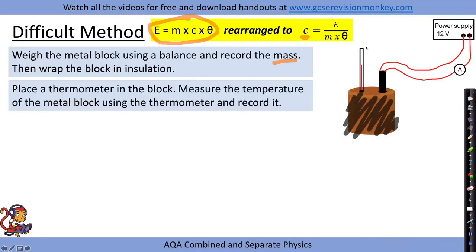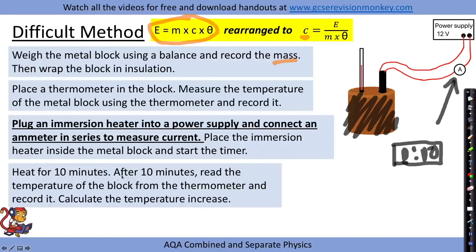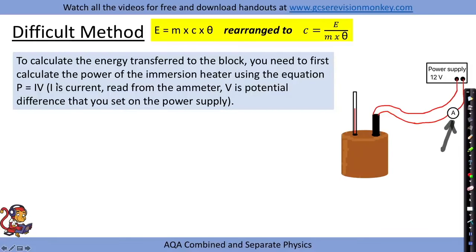This time, instead of a joule meter, we plug an immersion heater into a power supply and connect an ammeter in series to measure current. Place the immersion heater inside the metal block and start a timer. Heat it for 10 minutes as before, then after 10 minutes read the temperature and calculate the temperature increase. We have mass and temperature change as before.